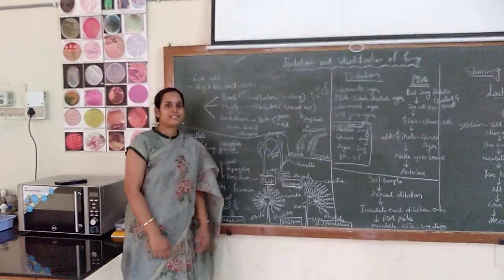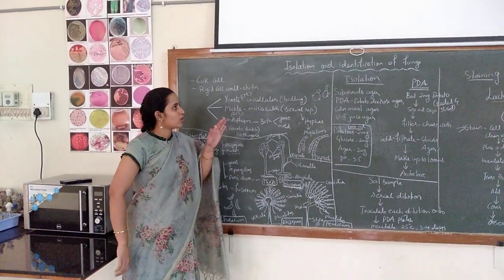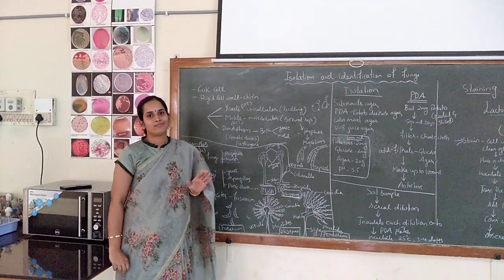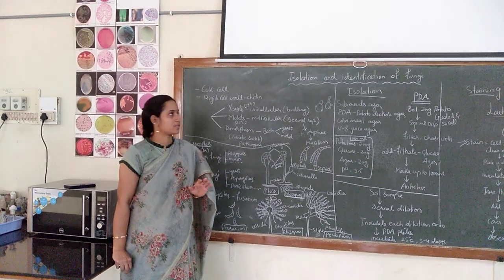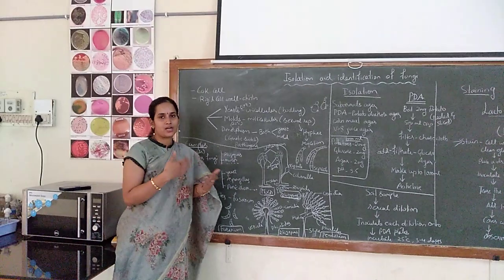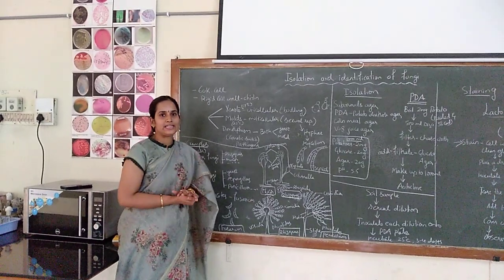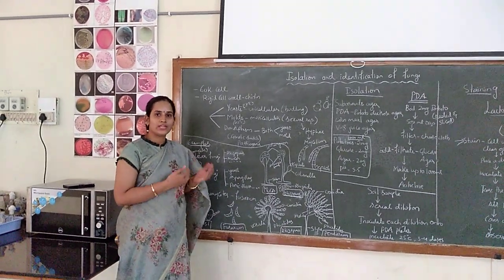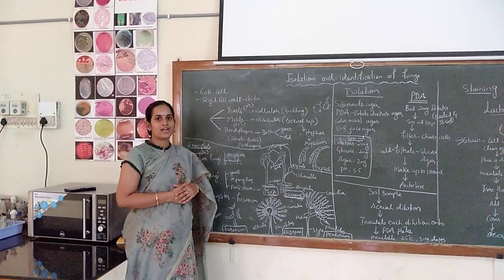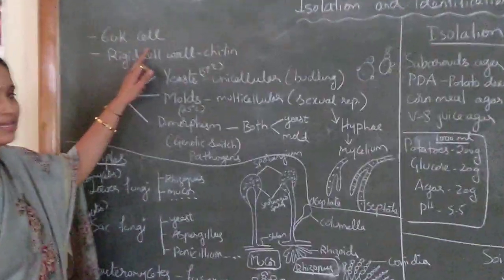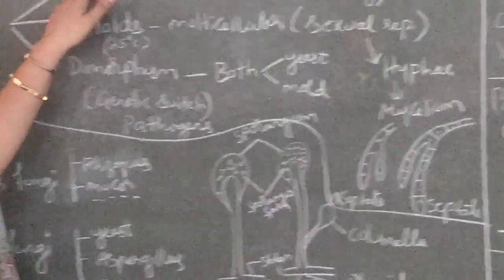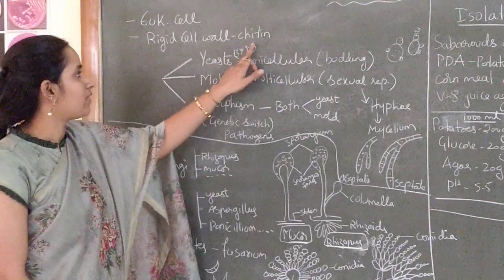Hello students, today we will see how to isolate as well as identify the fungi from different sources. Getting into the details of the experiment, let us see what is meant by fungi. Fungi is a eukaryotic cell which is made up of a rigid cell wall made up of chitin.